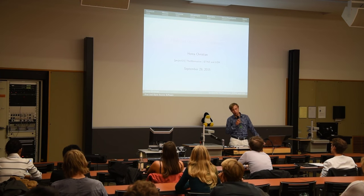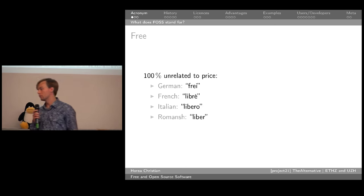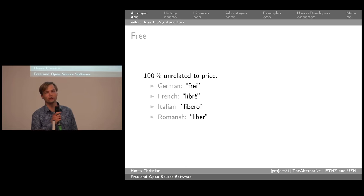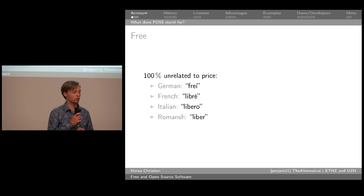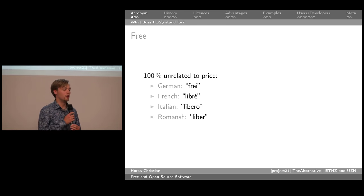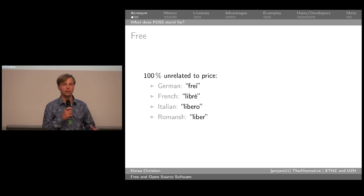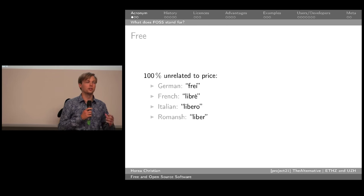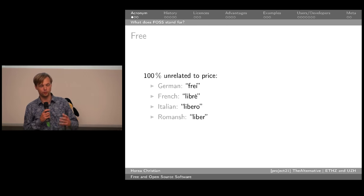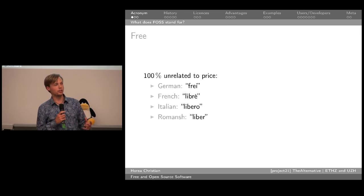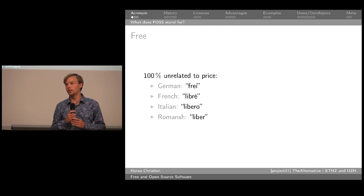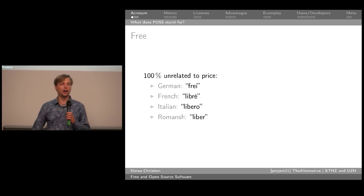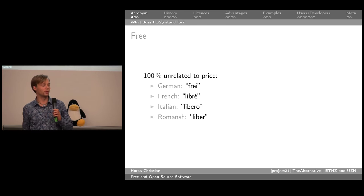Free and open source software — what does that mean? Free, the first word in free and open source software. Most of you might think it stands for free without cost, and indeed lots of free and open source software doesn't require you to pay for it. But 'free' in free and open source software is completely unrelated to price. This is very important, because it's not about getting stuff for free — it's about having freedom inherent in the software.